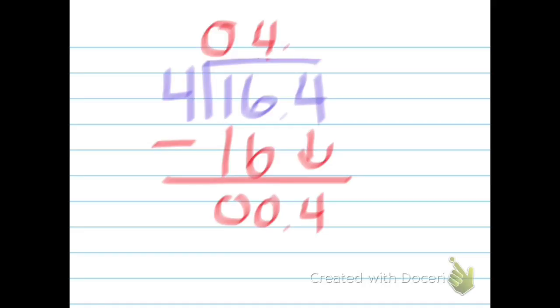Now, I know that 1 times 4 equals 4, so I'm going to put the 1 up here. 1 times 4 is 4, and then I'm going to subtract that, which equals 0. So your first answer is 4 and 1 tenth.